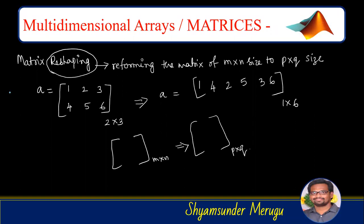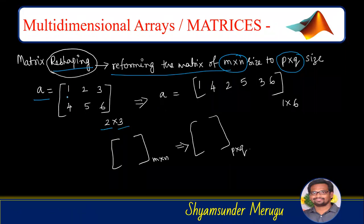Coming to matrix reshaping — reshaping means reforming the matrix. We have an M by N size matrix and we convert it into P by Q size. For example, if matrix A has 2 rows and 3 columns, by using matrix reshaping we convert this 2 by 3 matrix into a 1 by 6 matrix, meaning it will have 1 row and 6 columns.